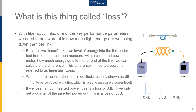We usually measure this loss in dB or decibels. A word of warning: don't confuse dB with dBm. dBm is a measure of power level referenced to 1 milliwatt. In the bottom graphic, if we lose half of our inserted power, we have a 3 dB loss. If we only get a quarter of our inserted power at the far end, we have a 6 dB loss. I've represented this with the 0 dB pulse, the 3 dB pulse, and the 6 dB pulse.